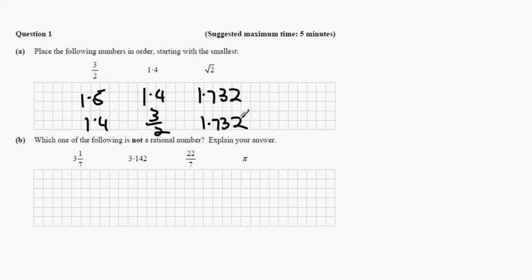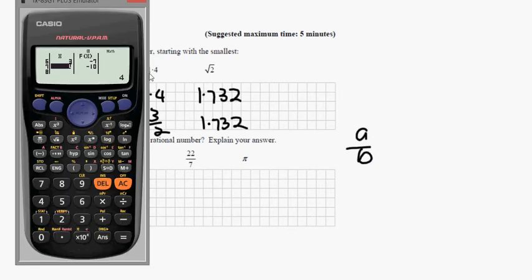Which of the following is not a rational number? Explain your answer. Rational numbers are numbers that can be expressed as a fraction — basically one number divided by another number. So we put in the calculator 3 and 1 third.